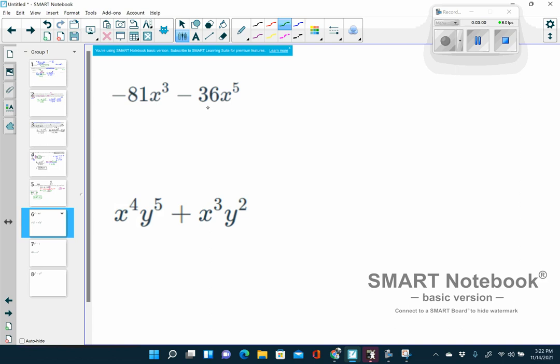Looking at negative 81 and negative 36, I know that 9 goes into both. 12 goes into 36, but not into 81. So I would venture to say that 9 is our greatest common factor. So let's go ahead and factor out a 9. But since I see that both of these are negative, I'm going to factor out negative 9. Wait, we're not done.